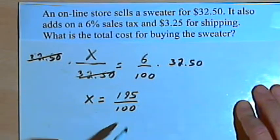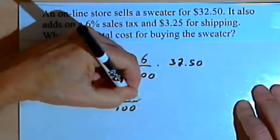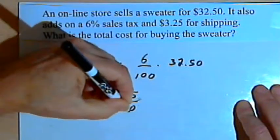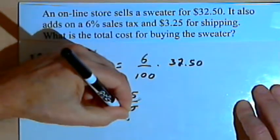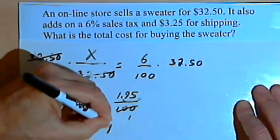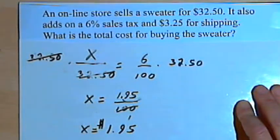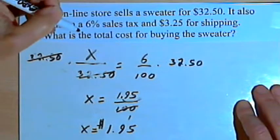On the right, I've got to multiply 6 times 32.50. That's going to be 195. I've got to divide that by 100. So to divide that by 100, I'll just take the decimal point at the end of it, move it two places to the left, and the denominator, the 100, just becomes a 1. So x equals 1.95, or $1.95. That's the sales tax.